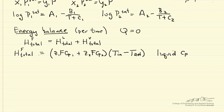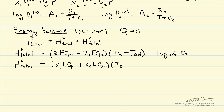We can pick a reference temperature however we want, as long as we use it consistently everywhere. The total enthalpy of the liquid phase leaving is the moles of component one per time times its liquid heat capacity, plus the moles of component two per time times its liquid heat capacity, all times (T_outlet minus T_reference). These are all liquid heat capacities.